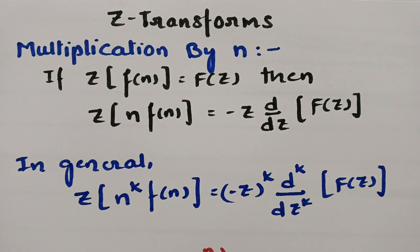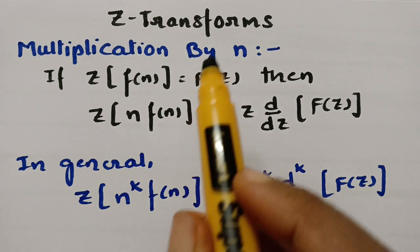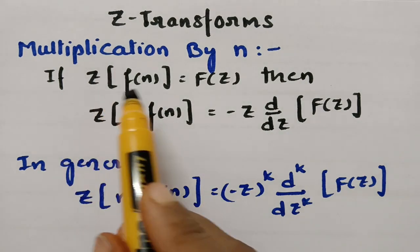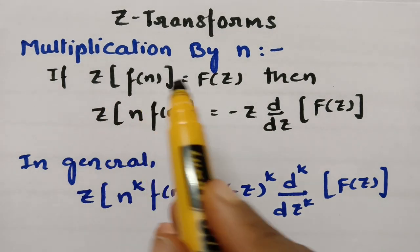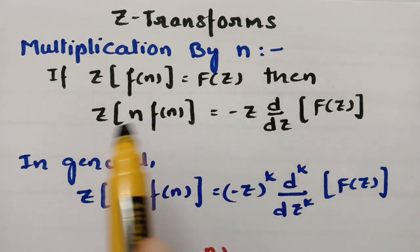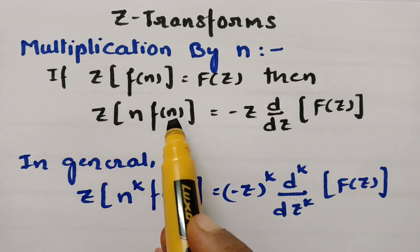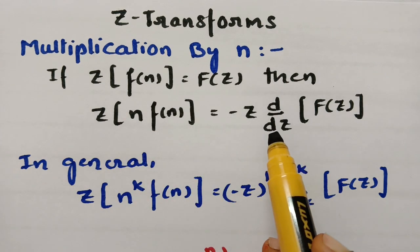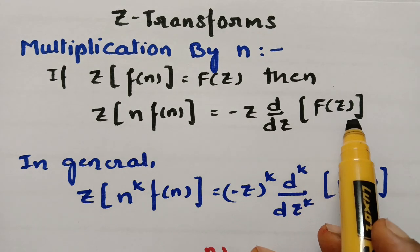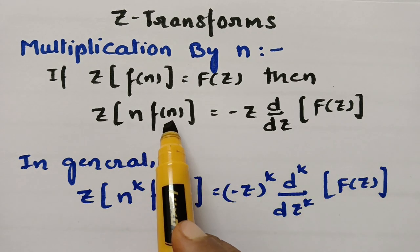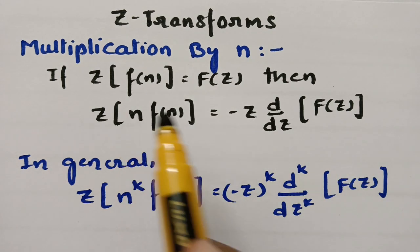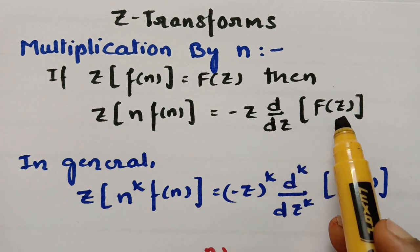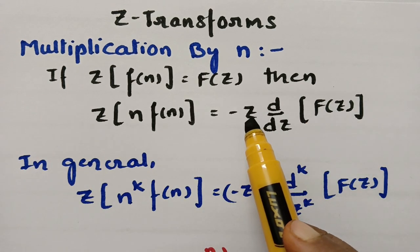Today's video is on multiplication by n from Z-transforms. According to the definition, if Z-transform of f(n) is equal to capital F(z), then Z-transform of n·f(n) is equal to minus z times d/dz of F(z). So if f(n) is multiplied by n, we have to take the derivative with respect to z once and multiply with minus z.